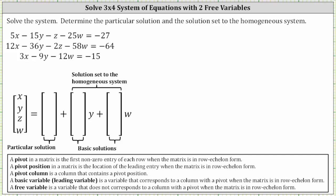We're asked to solve the system and determine the particular solution and the solution set to the corresponding homogeneous system. We will express the solution to the given system in the form shown below, where once we have the equations for x, y, z, and w, this first column matrix will contain the constants of the equations and will give us the particular solution. Then we'll have the coefficients of y in the second column matrix and the coefficients of w in the third column matrix, and the sum involving y and w will be the solution set to the corresponding homogeneous system.